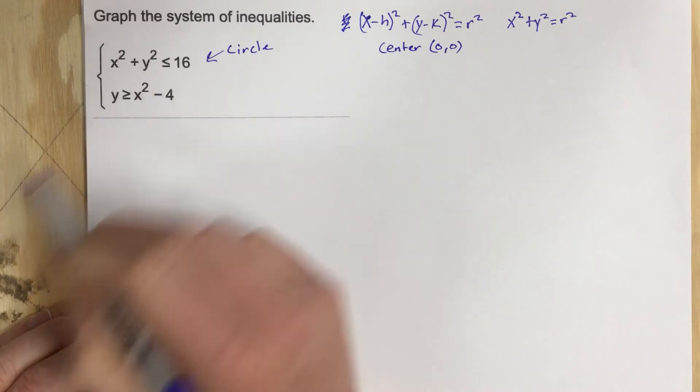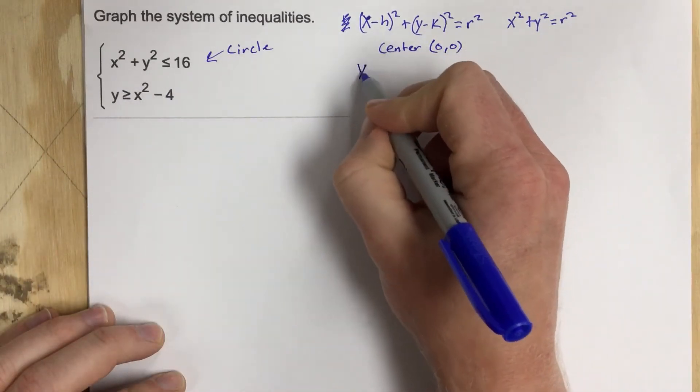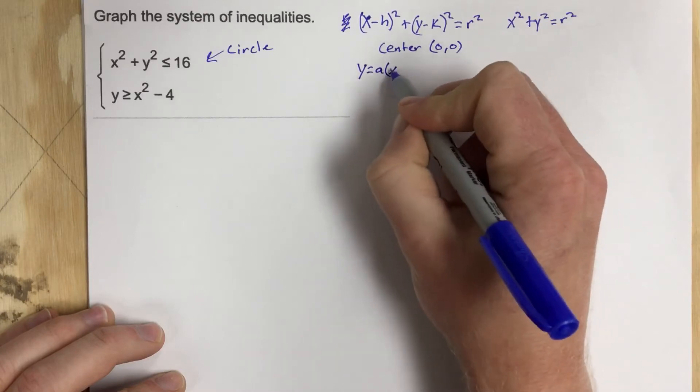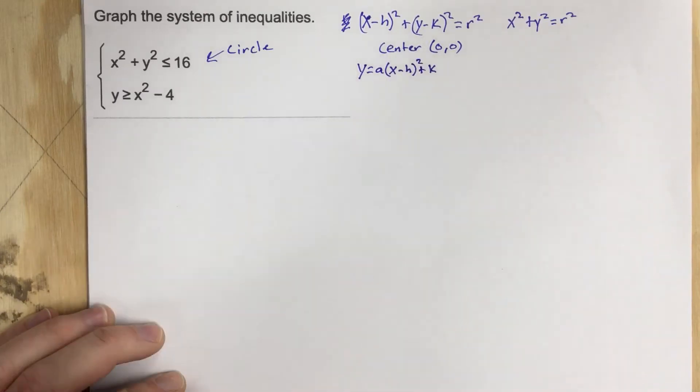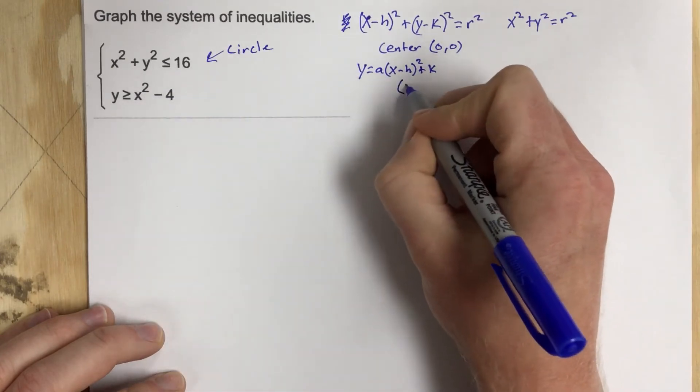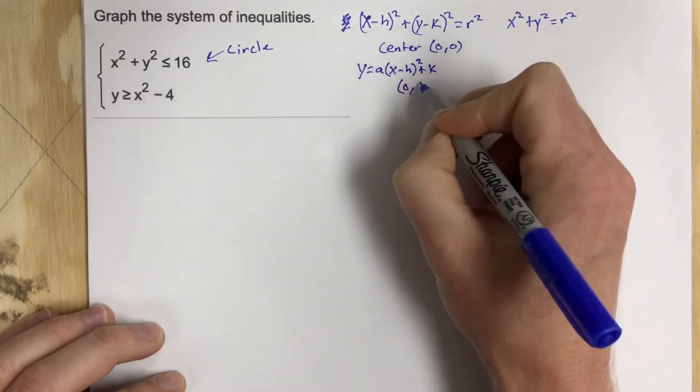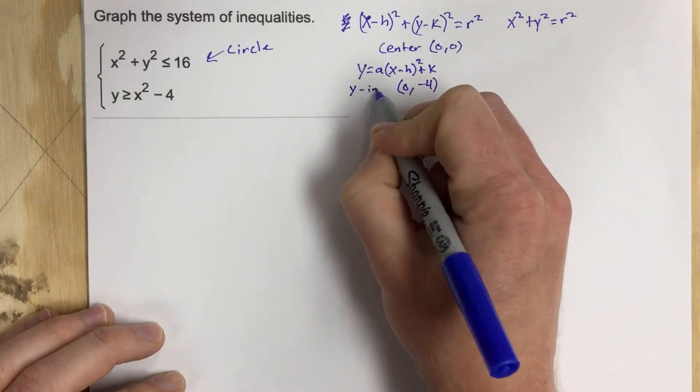This is a quadratic. This has an equation that is y equals a, x minus h plus k. Don't forget the square there. And usually if there's an h value it's just a shift. But they don't have an h value, which means it's 0, negative 4. This is what we would call the y-intercept for this one.